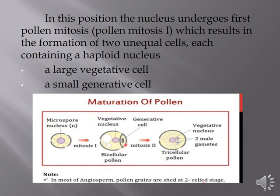These two unequal cells are formed by the division of the microspore nucleus. The generative cell first remains attached to the wall, but after some time it detaches itself from the wall and becomes engulfed by the larger vegetative cell.